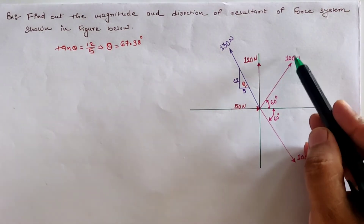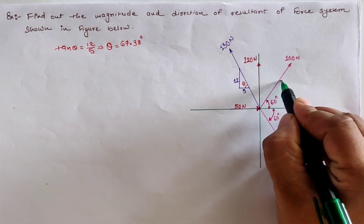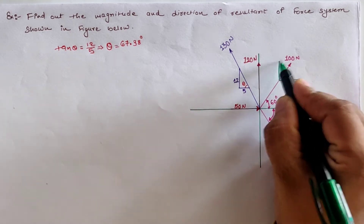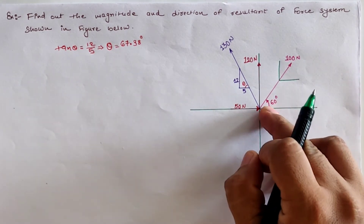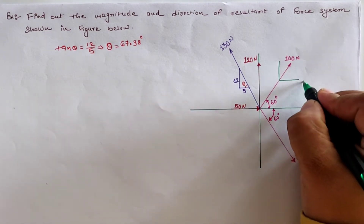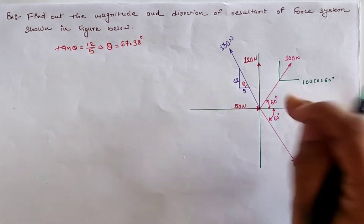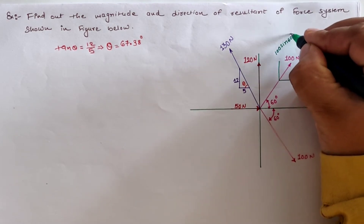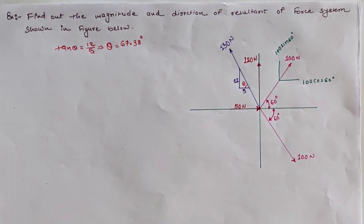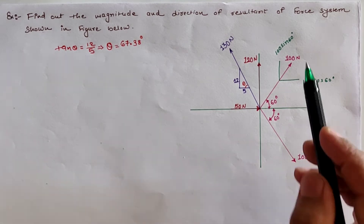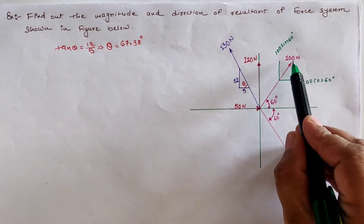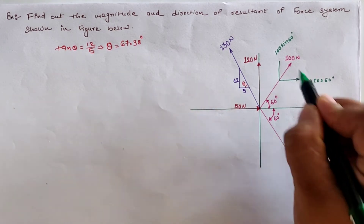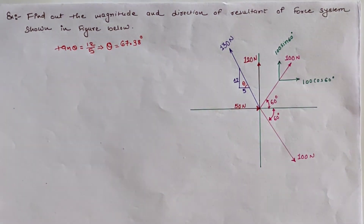The next step is to resolve all the forces into two perpendicular axes. For the first 100 newton load, the horizontal component is 100 cos 60 and the vertical component is 100 sin 60, since it acts at 60 degrees with the horizontal. We must take care of the direction of these resolved forces — since the 100 newton load is directed outward, both components are also in the outward direction.